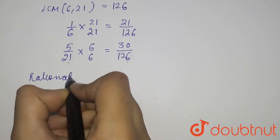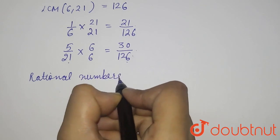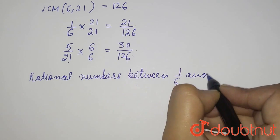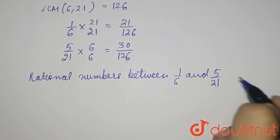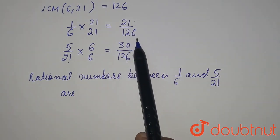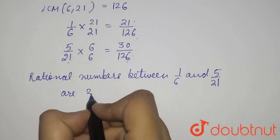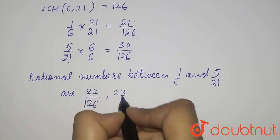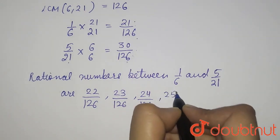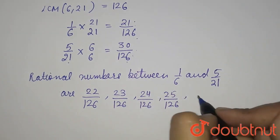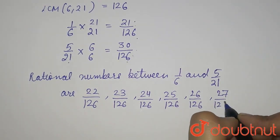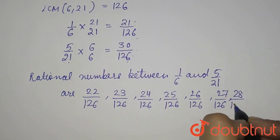Rational numbers between 1 by 6 and 5 by 21 are... So, 1 by 6 is nothing but 21 by 126. 21 ke baad, we can say 22 by 126, then 23 by 126, then 24 by 126, then 25 by 126, 26 by 126, 27 by 126 and 28 by 126.